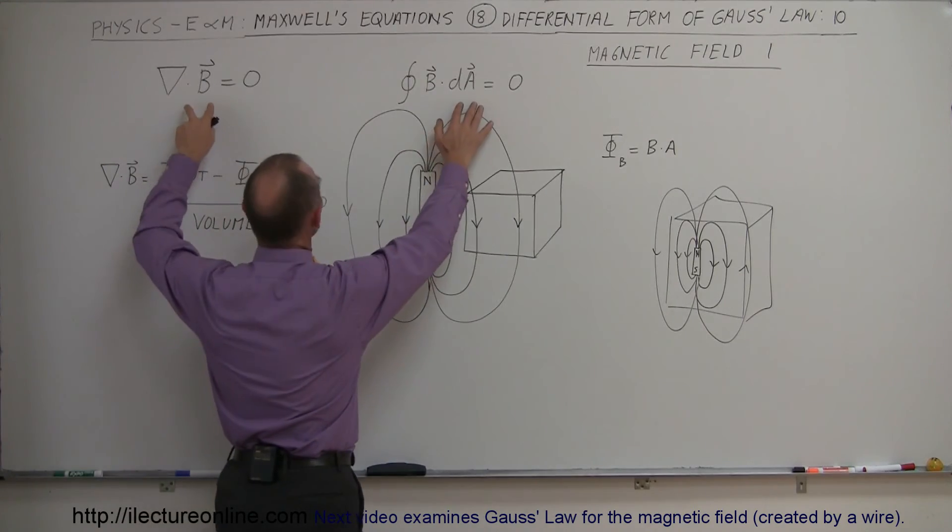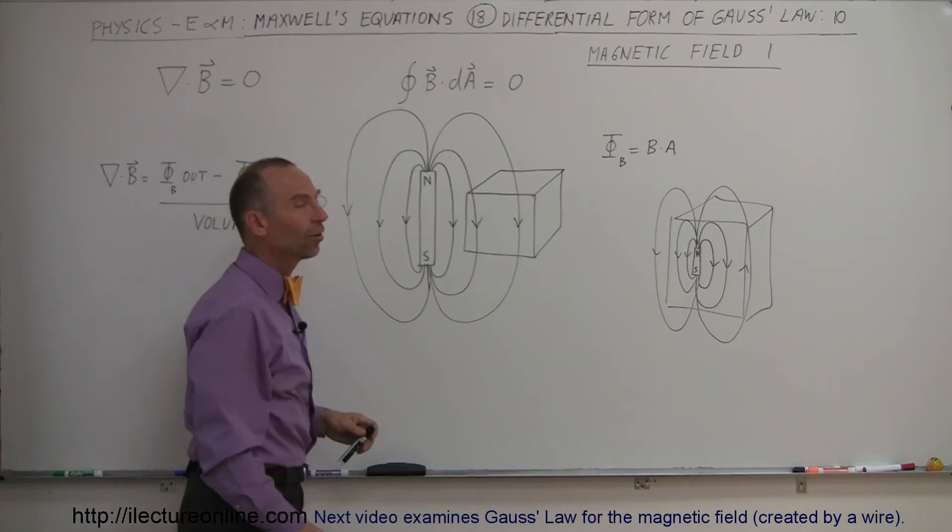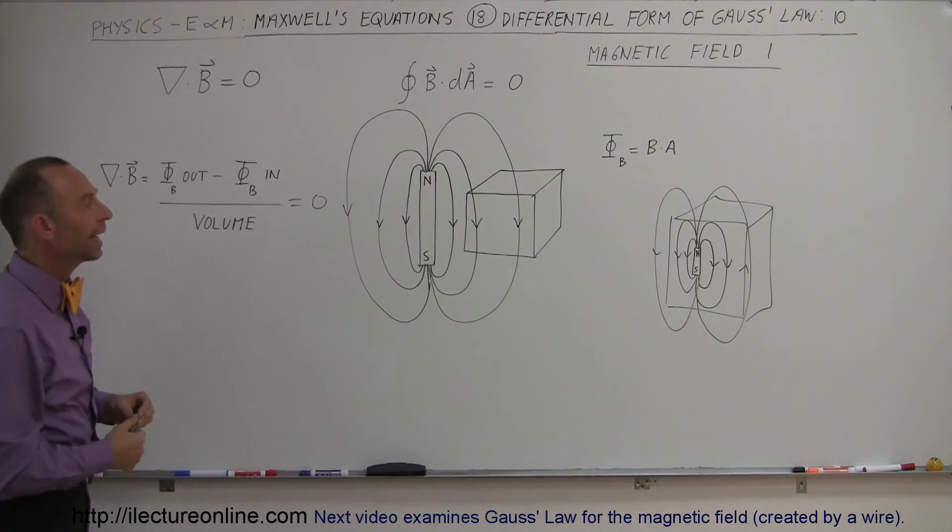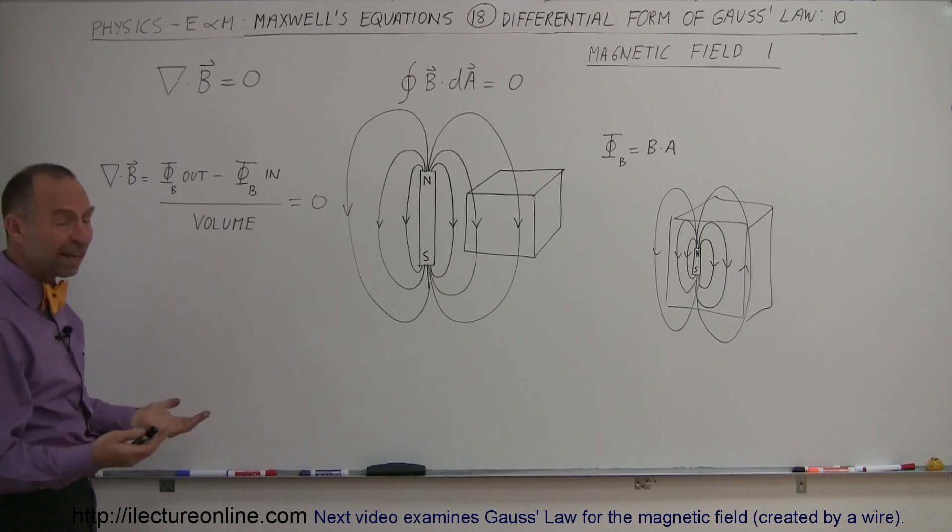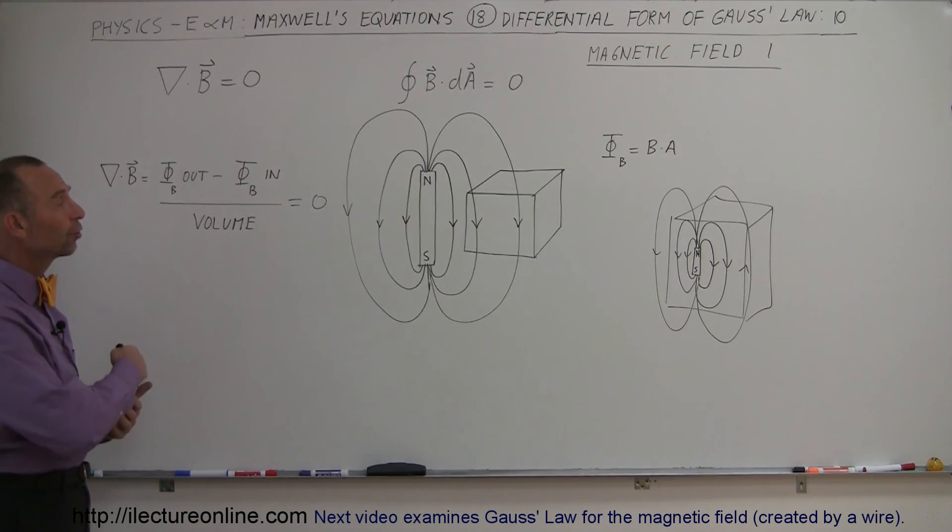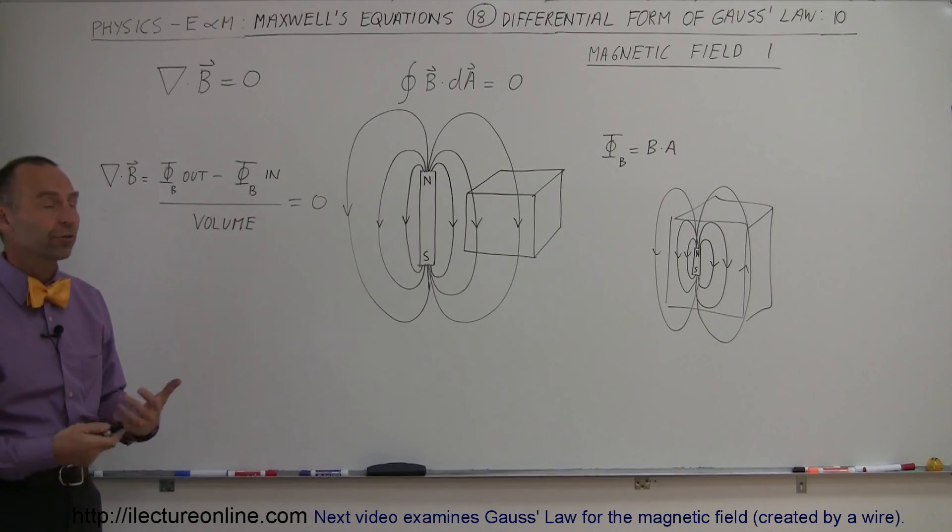And so we now see the similarity between these two equations. So it's a pretty nice way of indicating that magnetic fields don't have point sources, don't have point sinks, and the same amount of field will always go through a surface as will come out of the surface, and therefore, the divergence is zero.